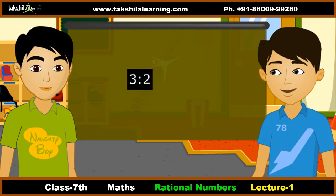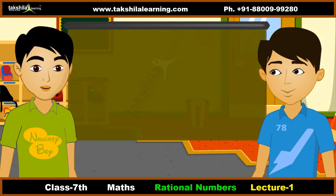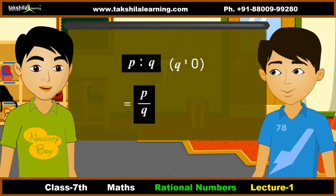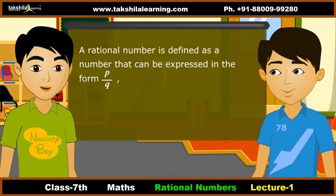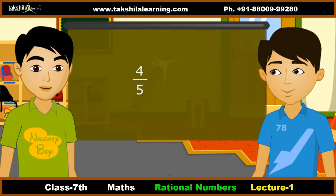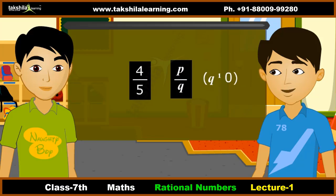The word 'rational' arises from the term 'ratio.' A ratio like 3 is to 2, which can also be written as 3 by 2, is a rational number. Similarly, the ratio of two integers P and Q, where Q is not equal to 0, written as P by Q, is a rational number. For example, 4 by 5 is a rational number because it is in the form P by Q where Q is not equal to 0.